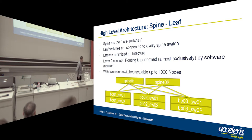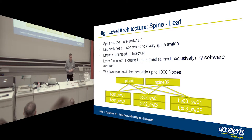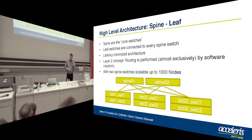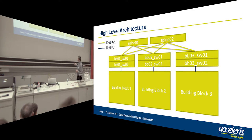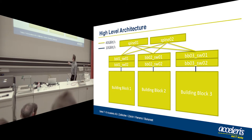For the architecture, what we tried to do is build a scalable architecture with the Spine-Leaf concept, which is quite common. With this concept we can scale up to about 1,000 nodes — small compared to Google, but for Switzerland that would be fine. We introduced a building block concept: under every leaf switch we have a building block where we can place compute nodes, storage nodes, whatever. The core is 40 gigabit and the leaf network is 10 gigabit.